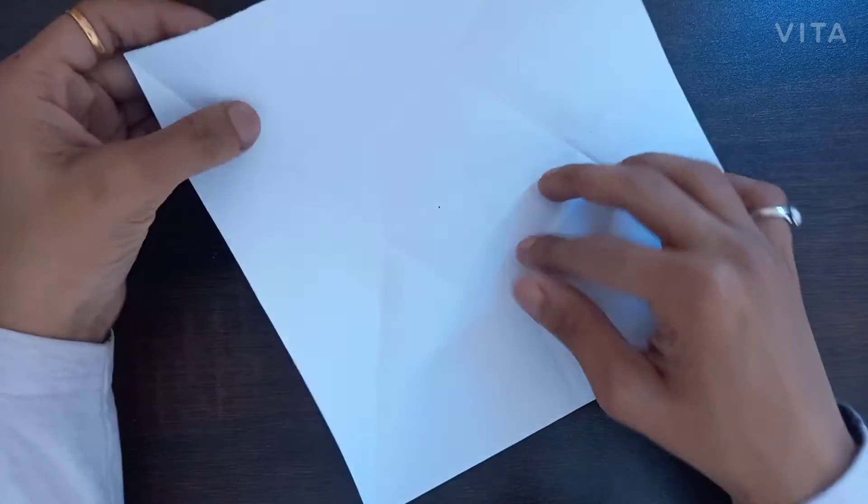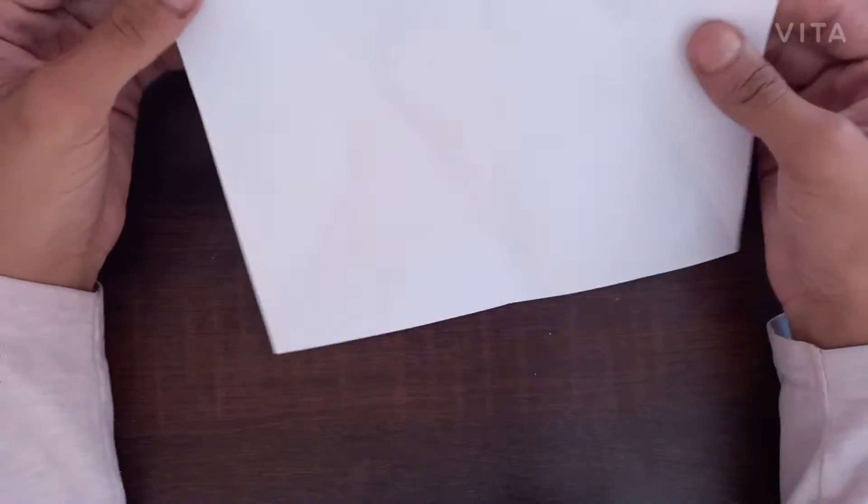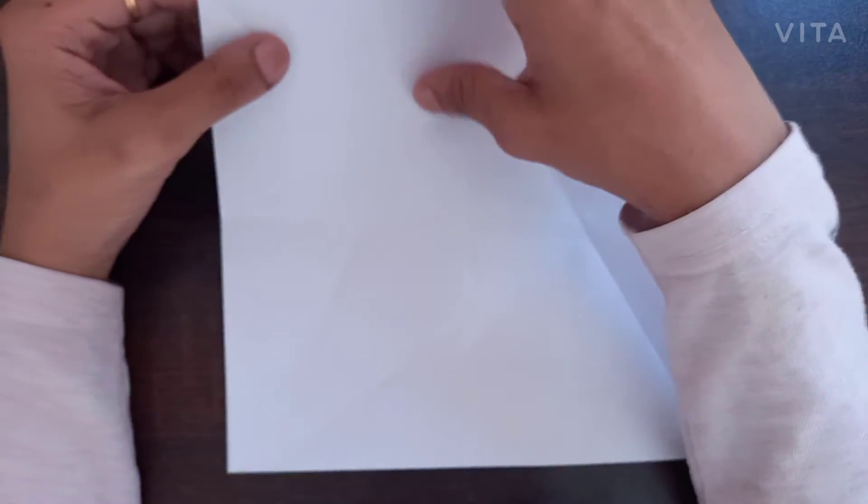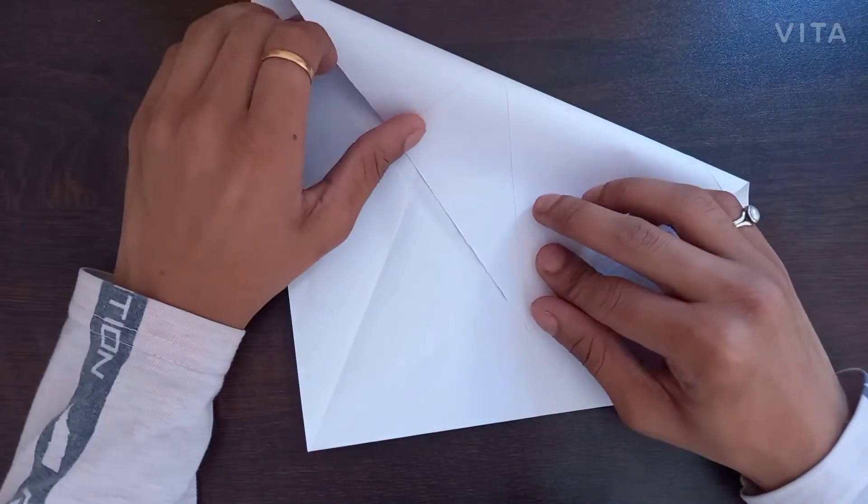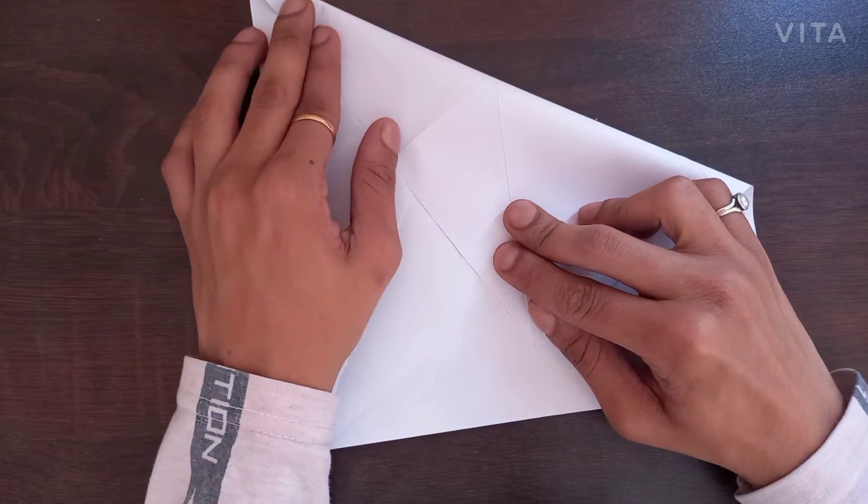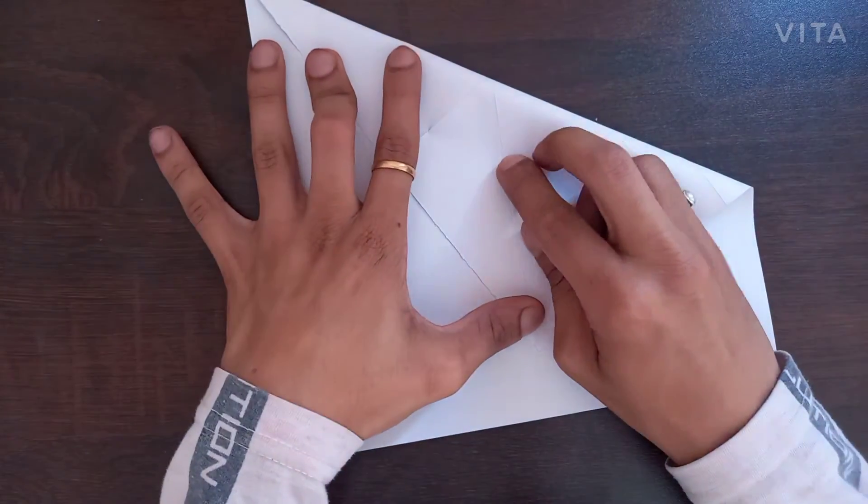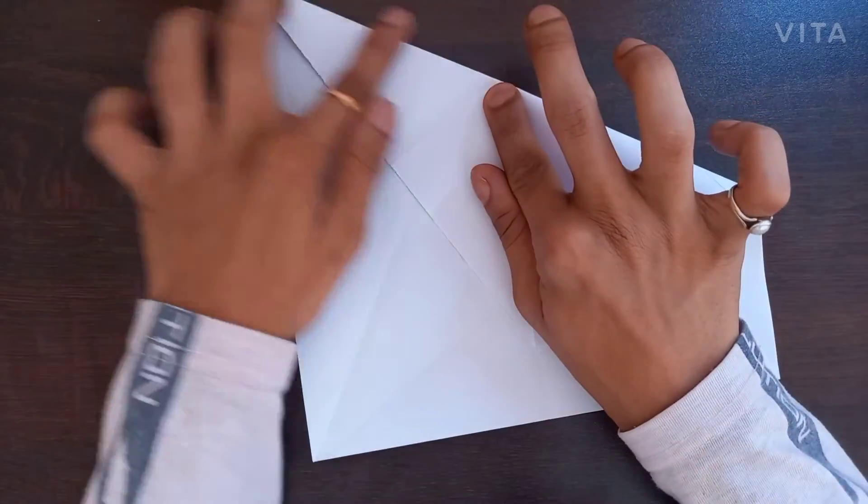Now this was the first fold which we had folded. Now repeat the same for the other side. Match the creases along with the edge of the paper and fold it only halfway till this point.